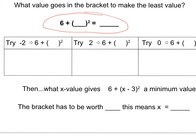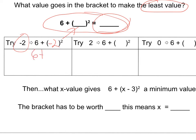I've got a simple expression: 6 plus (bracket) squared equals some number, and I want to make that the least possible value. So what am I going to put in that bracket to make it as low as possible? I'm going to try putting a negative into the brackets. So if I put negative 2 in, I've got 6 plus negative 2 squared. According to BEDMAS, I have to do squaring first, so negative 2 squared is 4. That becomes 6 plus 4, which is 10. So when I put a negative in, I get positive 10.